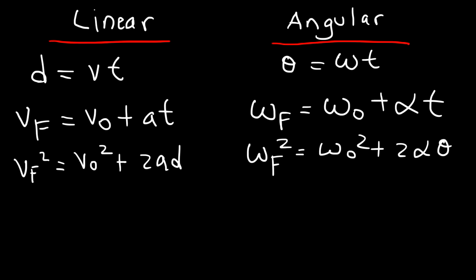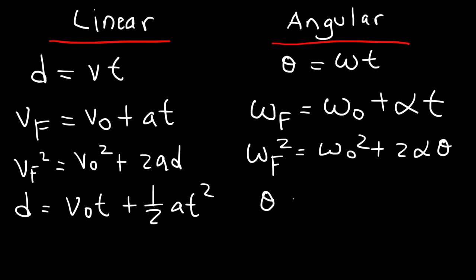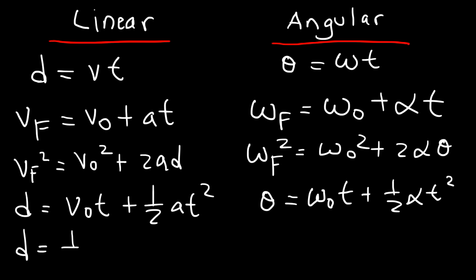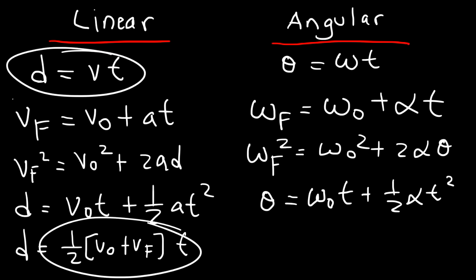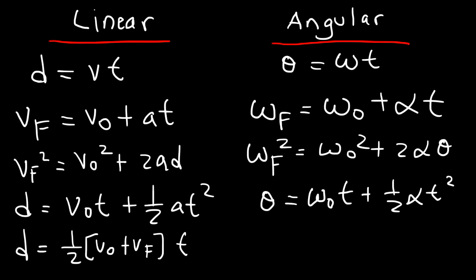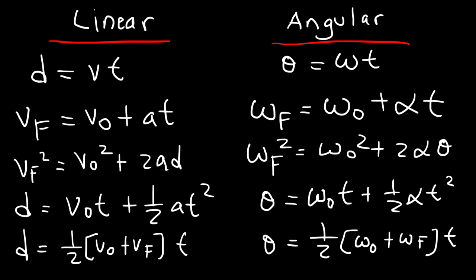The third equation you need to know is d equals v initial times t plus one-half a t squared. On the angular side, theta equals omega initial times t plus one-half alpha t squared. There's one more equation: displacement equals average speed times t, where average speed is the sum of initial and final velocity divided by 2. So theta equals one-half times (omega initial plus omega final) times t. You may want to write down these equations for the problems coming up.